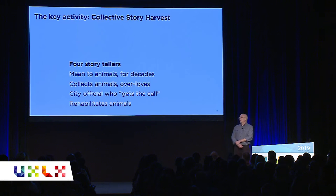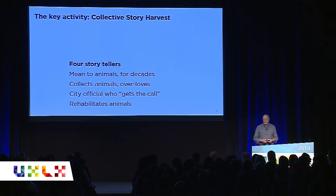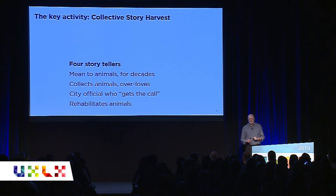We arranged for four people to come to the day: one who had a career of being mean to animals in the horse racing industry and has since reformed as an advocate; one who over-loves — who collects wild animals in her backyard, which is also not helpful; a city official who gets the call when there's trouble with coyotes in a neighborhood; and someone who cares for animals who've been on the receiving end of some of these treatments. It's a method called collective story harvest.